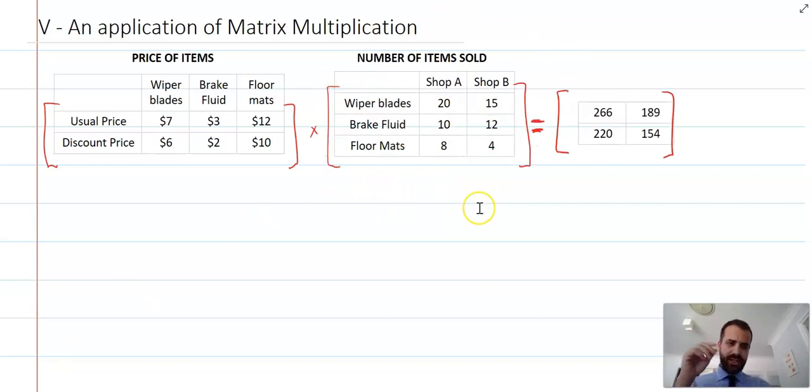The second matrix says how many items are sold in Shop A, a Super Cheap Auto over there, and Shop B, a Super Cheap Auto over there. So Shop A sold 20 wiper blades whereas Shop B only sold 15. Now we've got this context, we can take the two matrices and shove them into a third matrix.